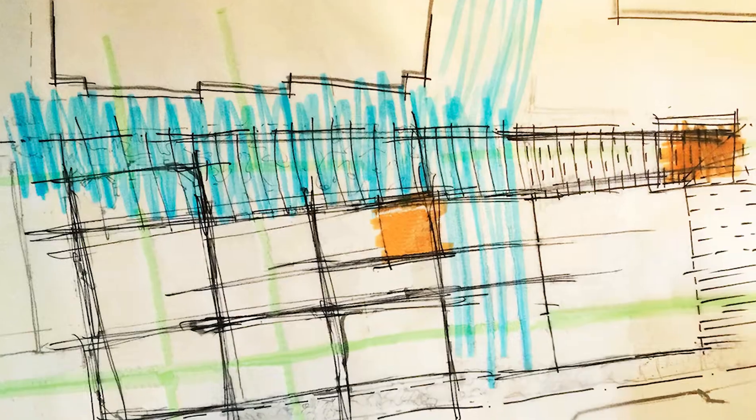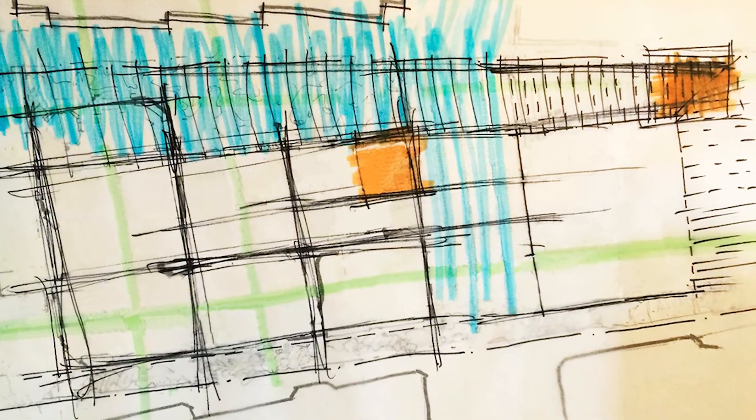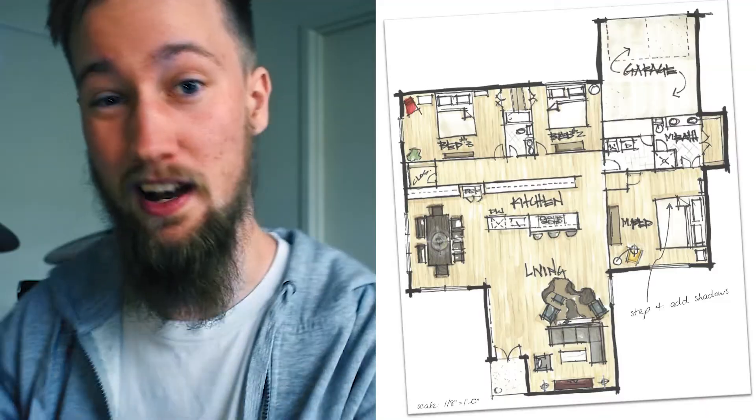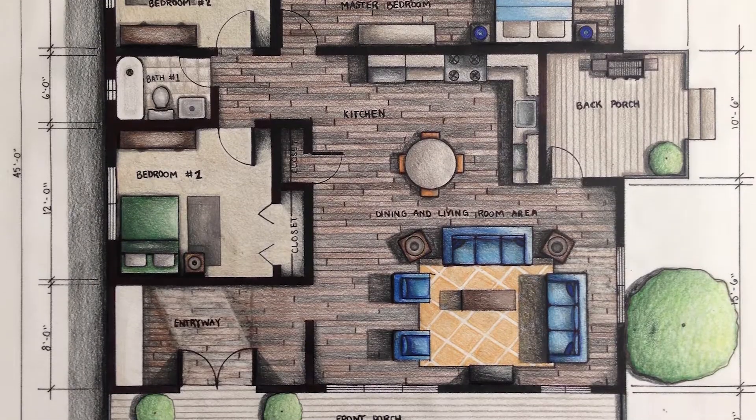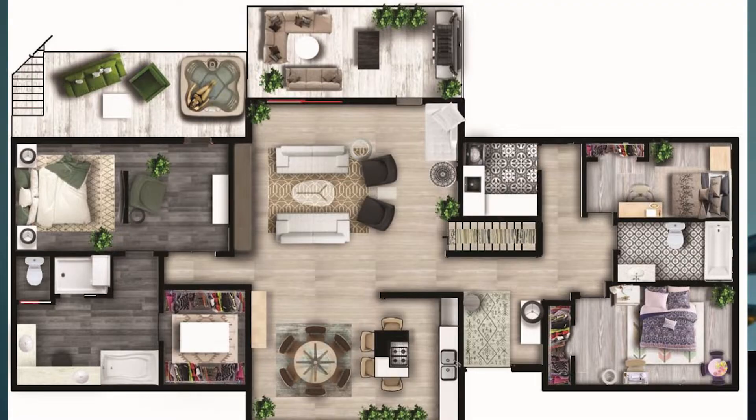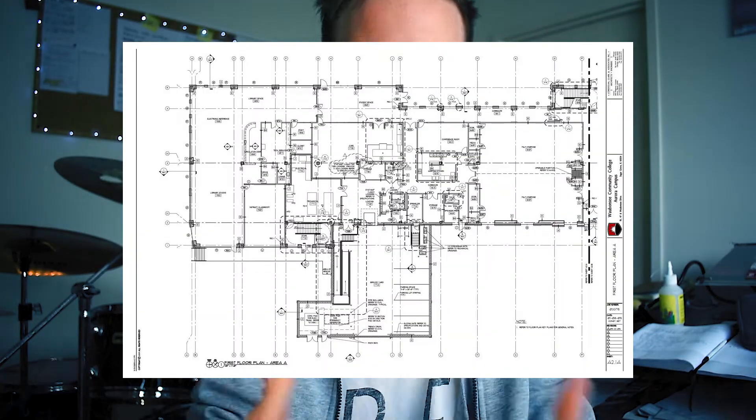But first of all, what is a floor plan? There are different types of floor plans, and this is important to understand. There are diagrammatic plans that are generally not to scale. There are sketch plans which are to scale. There are visualization and rendered plans that show how a space is going to be used. Then there are documentation and construction plans which show how a building is going to be built.